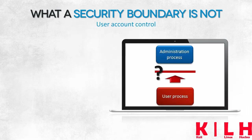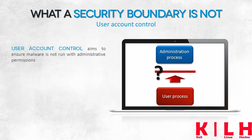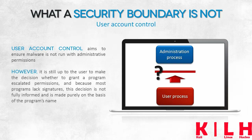Another solution that is often seen as a security technology, and which was initially marketed by Microsoft as such, is User Account Control. We'll dedicate one of the next modules to it, but let's now try to find out if this technology really defines a system security boundary. User Account Control aims to ensure that programs aren't run with escalated permissions — administrator privileges. Even programs launched by an administrator shouldn't be excluded from this rule. We've just had to explicitly allow a program to gain administrator privileges.